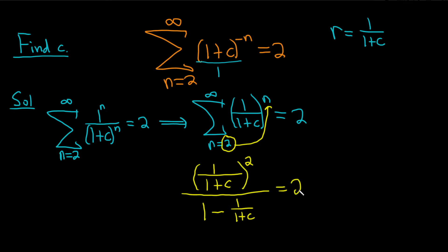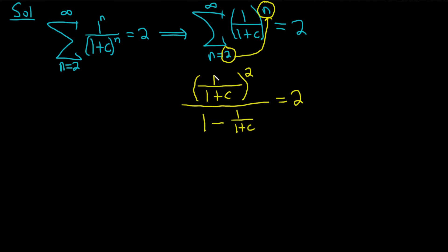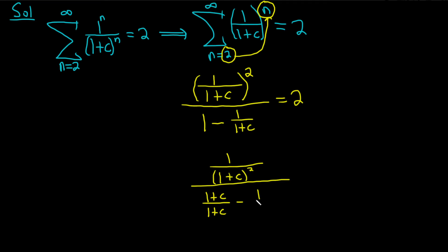The formula says you take this number and plug it in here always — whatever number is here, whether it's 1 or 17, you just put it there, then divide by 1 minus r. Let's clean this up using properties of exponents. In the numerator we get 1 squared over (1 + c)^2. In the denominator, let's perform the subtraction: write 1 as (1 + c)/(1 + c), minus 1/(1 + c), and this equals 2.